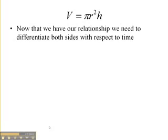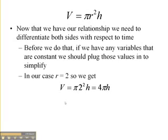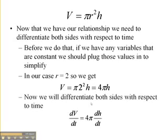So we need to differentiate both sides with respect to time. Now before we do that, if we have any parts of our equation that are constant, we should plug those values in to simplify a little bit. Well remember, the r in our problem is constant, it's always going to be 2. So if we plug that in, our formula actually simplifies down to V equals 4 pi h. So differentiating both sides with respect to time, we get dV/dt equals 4 pi is just a constant, and the derivative of h with respect to time is dh/dt.